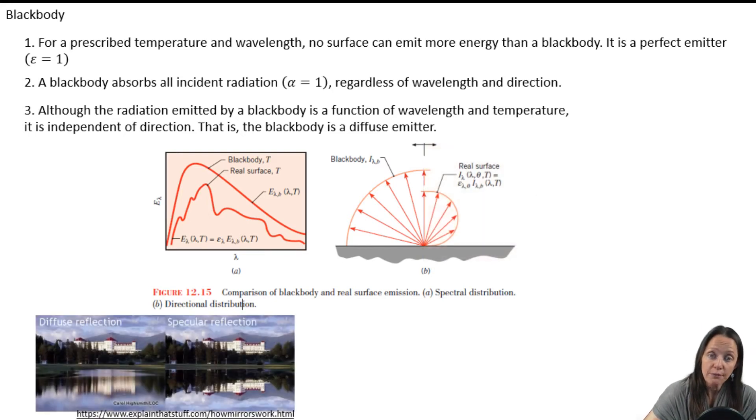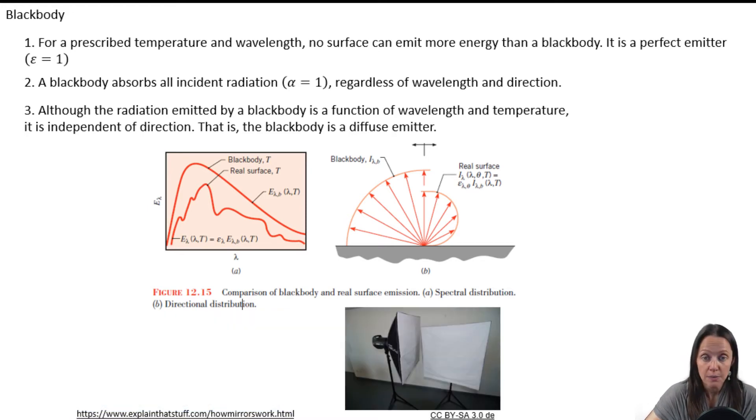In addition to diffuse emitters, you can also have diffuse reflectors, as opposed to spectral reflectors, where the incident radiation is reflected off in a specific direction. You can also have diffuse transmitters, so that the light is transmitted in all directions evenly, instead of one direction more strongly. But in this class, we're only going to focus on diffuse emitters.